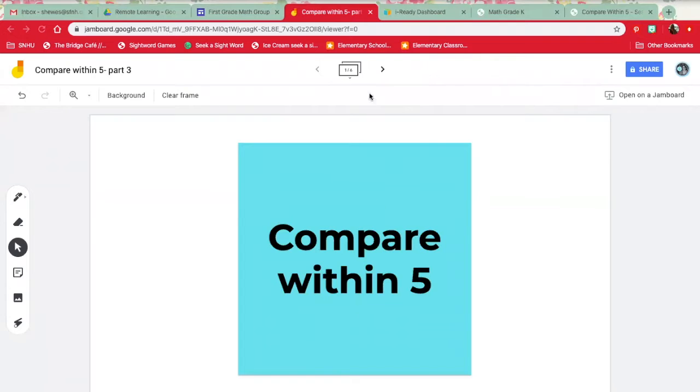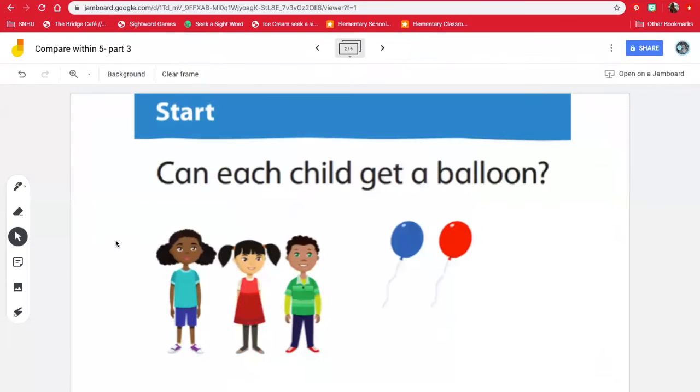Compare within five. Here we have a problem. It says, can each child get a balloon? Well, let's count how many children there are. I see one, two, three. So we have three children. How many balloons do we have? One, two.